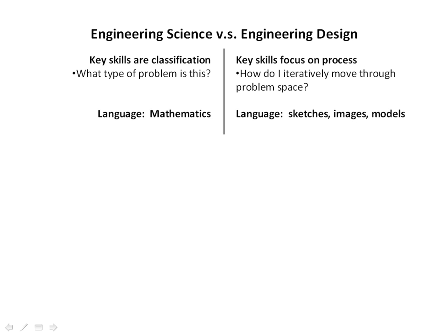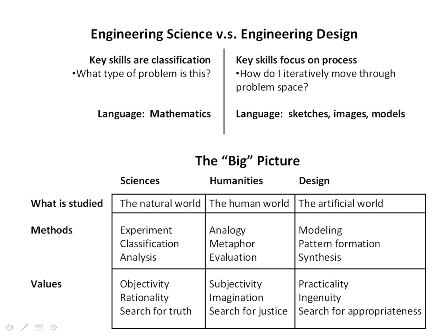Looking at an even broader perspective, consider three classes of human knowledge: the sciences, the humanities, and design. What's studied in the sciences is the natural world; in the humanities, we study the human world; and in design, we can say this is the study of the artificial world. The methods used by scientists are experiment, classification, and analysis — very rational skills. In the humanities, we use analogy, metaphor, and evaluation. The methodology we use in design is modeling, pattern formation, and synthesis — creating new solutions out of old solutions.